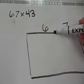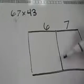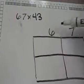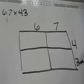Now, kind of like we did last time, I'm going to draw a line in between my tens and my ones, breaking up the 6, the 7, and the 4, and the 3.